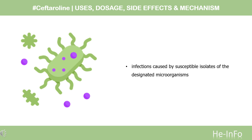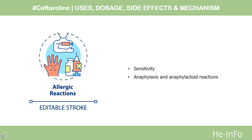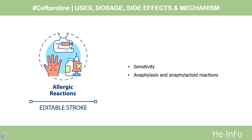What is ceftiroline used for? Ceftiroline Fosamil is indicated for the treatment of patients with the following infections caused by susceptible isolates of the designated microorganisms. Contraindication: known serious hypersensitivity to ceftiroline or other members of the cephalosporin class, anaphylaxis and anaphylactoid reactions.